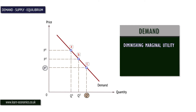Marginal is an important concept in economics and means the additional amount of something resulting from an economic action. In this case, marginal utility is the additional benefit gained from consuming one more unit of a good or service.